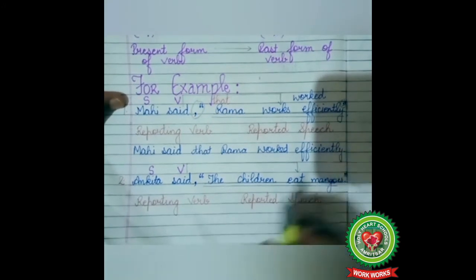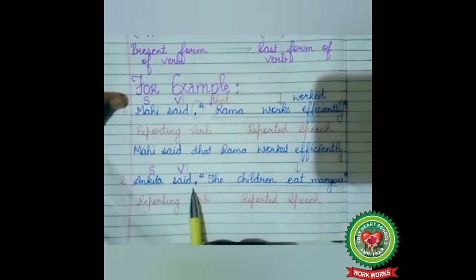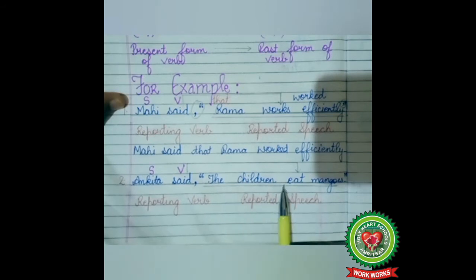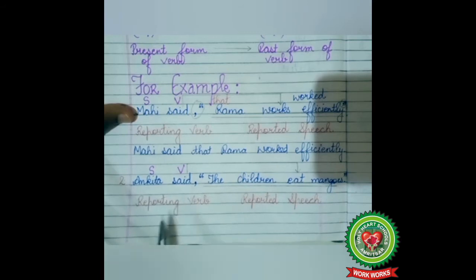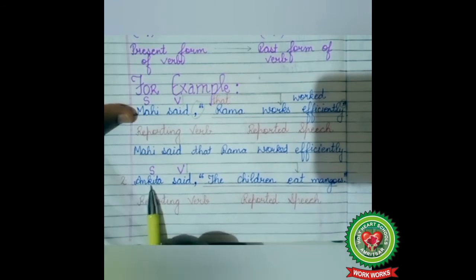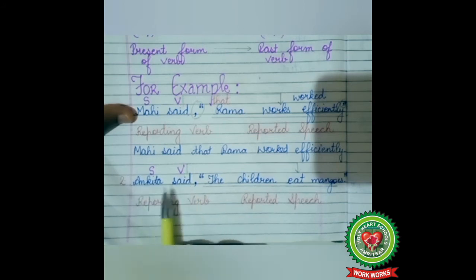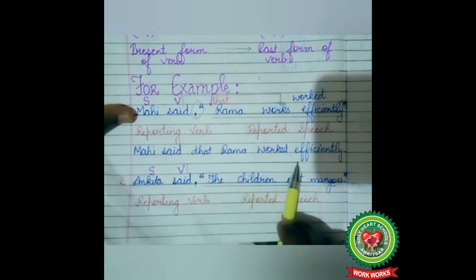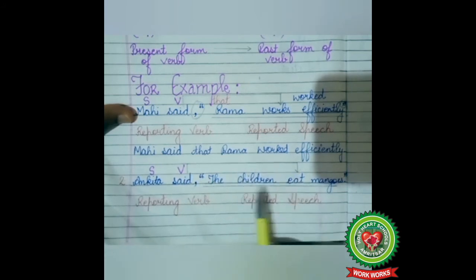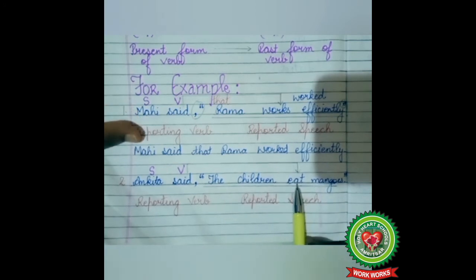Let's move on to the next example. Ankita said, inverted commas, 'The children eat mangoes.' Full stop, inverted commas close. Ankita said is the reporting verb, and 'The children eat mangoes' is the reported speech. The reporting verb 'said' is in past tense, so the tense of the reported speech will change. The reported speech is in simple present tense and simple present tense changes into simple past tense.